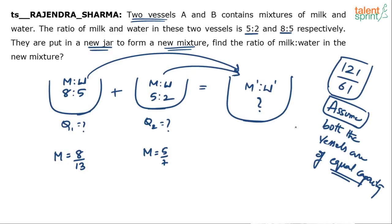Now, how to get 121:61, I am not going to explain because there are videos on alligation and mixtures you can watch to find out how to get the new ratio when the two individual ratios are given to us. But my question is, in this particular case, you cannot do that because we have not been given any data about the ratio of the quantities.